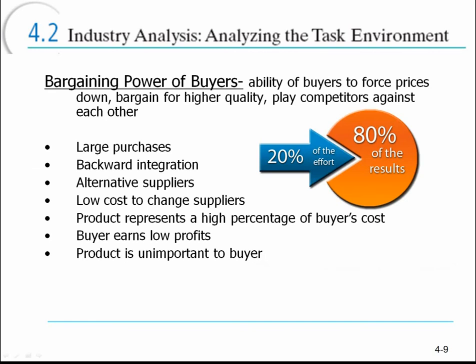Bargaining power of buyers refers to how much control or influence buyers have on your company. Buyers are those individuals purchasing your product. If there are very few buyers and they represent the bulk of your sales — for example, the 80-20 rule where 20% of customers represent 80% of sales — then your buyers have significant power. Losing any one of them would result in a drastic reduction in sales, so it's good to have diversity of buyers to avoid that danger.